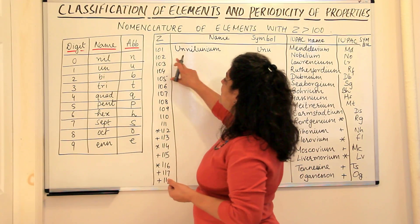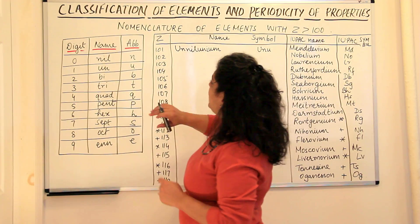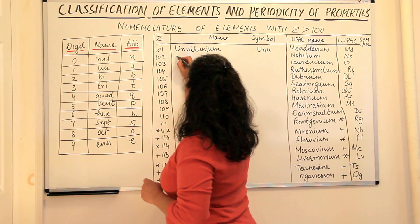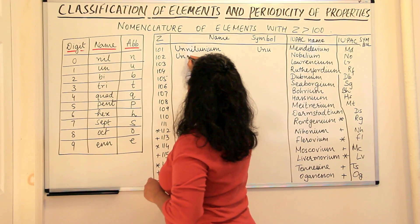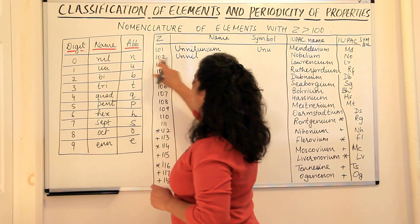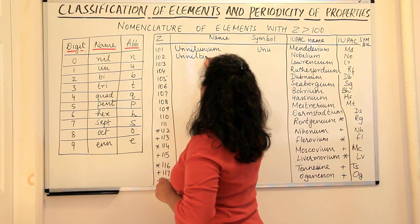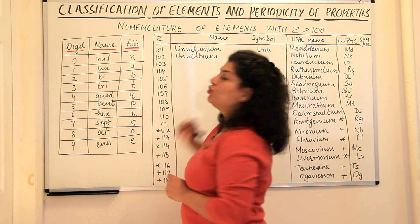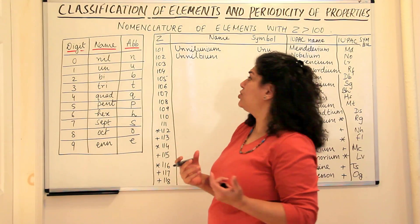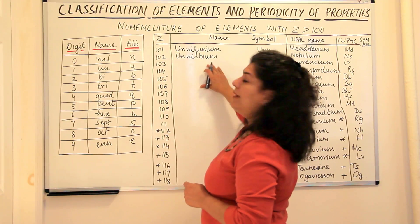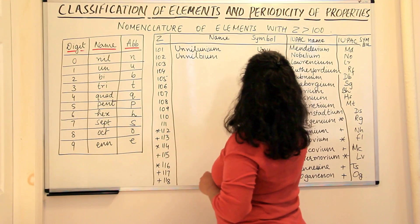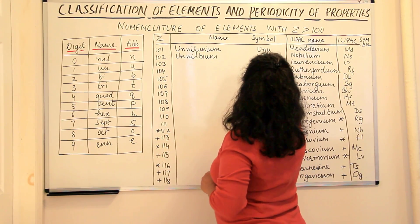The next element is 102nd element. What would its name be? 1 is un, 0 is nil and 2 is bi. So it would be un, nil, bi, ium. We will not put two i's because they are two vowels then. So unnilbium. And the symbol would be UNB.